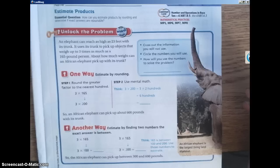We're going to turn that into an I can statement. So we're going to replace how can with I can estimate products by rounding and determine if exact answers are reasonable.